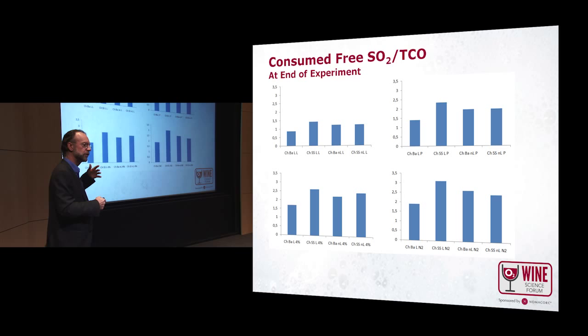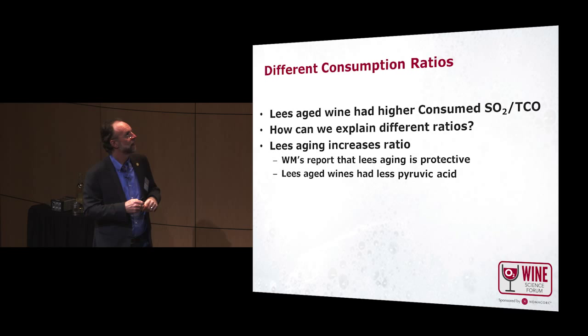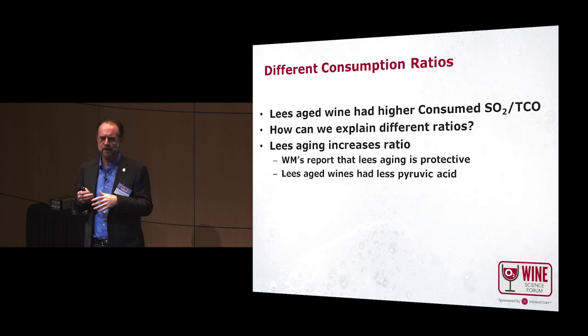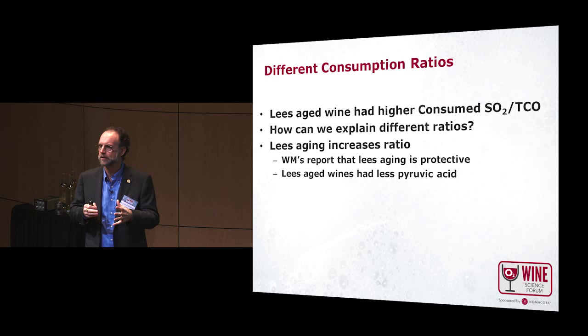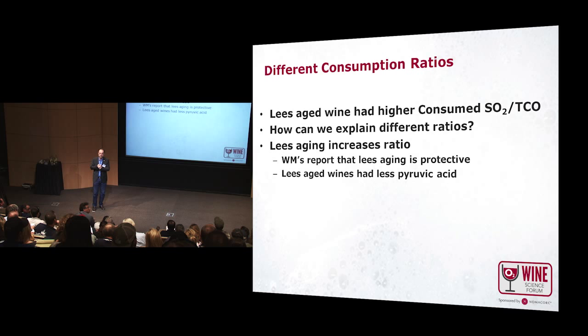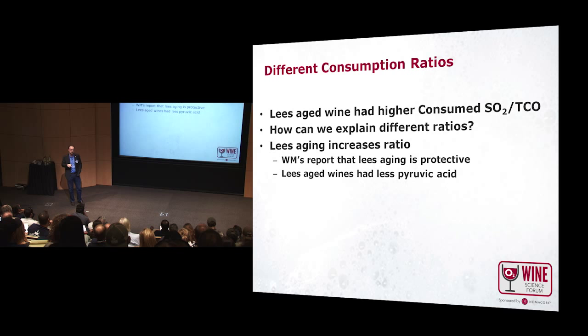We looked at the other data and a pattern came out — the lees-aged wine had a higher ratio, consistently across all of our treatments. This seemed very striking. What could explain that? How could lees-aging actually act as a preservative? What you're saying is that the SO2 is working better in a lees-aged wine. Now, various winemakers have told me that when they do lees-aging, they feel it acts as a preservative to the wine — that it doesn't oxidize as quickly. When we started looking through the data, what's different, we did notice that consistently the lees-aged wine had less pyruvic acid.